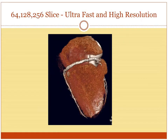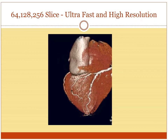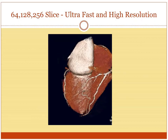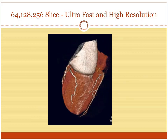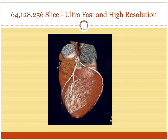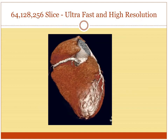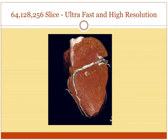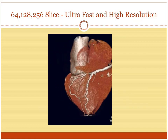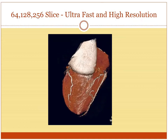Now with a really multiple-slice machine, like a 256-slice CT, you can get spectacular images. This is the heart, and you can reconstruct it in multiple planes and rotate things around. It's pretty dazzling.